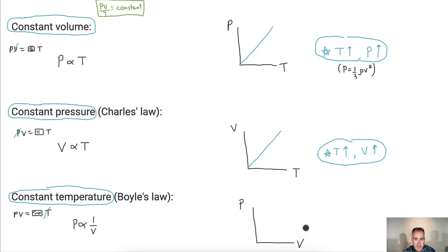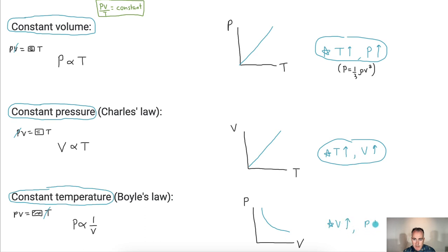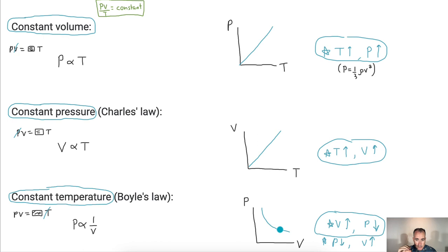If I have a graph of pressure versus volume, it follows a 1/x curve — it's not linear but curves like a hyperbola. As the volume goes up, the pressure goes down, and vice versa. In other words, pressure and volume are inversely proportional. If less pressure acts on something, the volume increases.